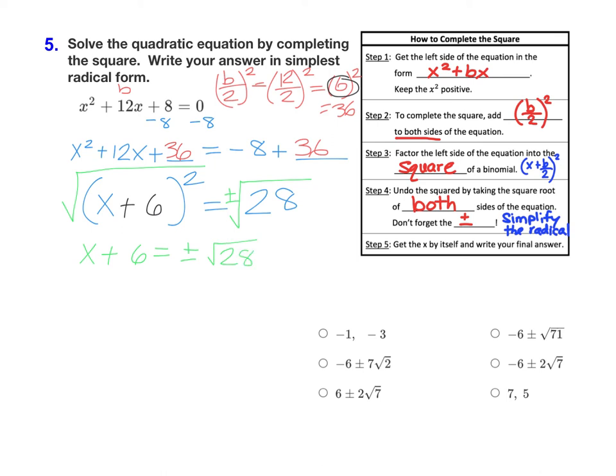At this point, you should check to see if your square root simplifies. Square root of 28 has a perfect square that divides evenly into it. You can either use the tree or the perfect square method. I'm going to make a tree here quick off to the side. So for square root of 28, I know that 28 is 4 times 7, and 4 is 2 times 2.